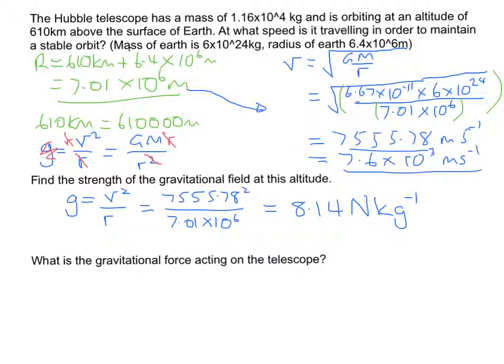And for the third part of this question, what is the gravitational force acting on the telescope, we could use f equals GM1M2 over r squared or we could also use f equals mg, and because we've gone to the effort of doing all the calculations above which incorporates some of that first equation, we're just going to use the second one.